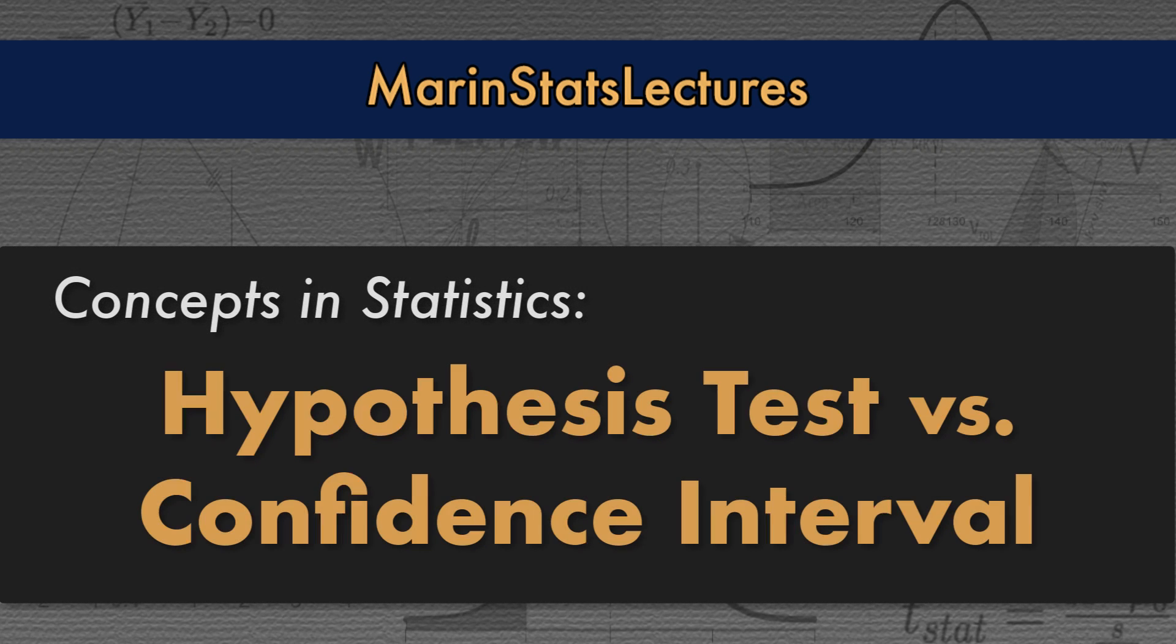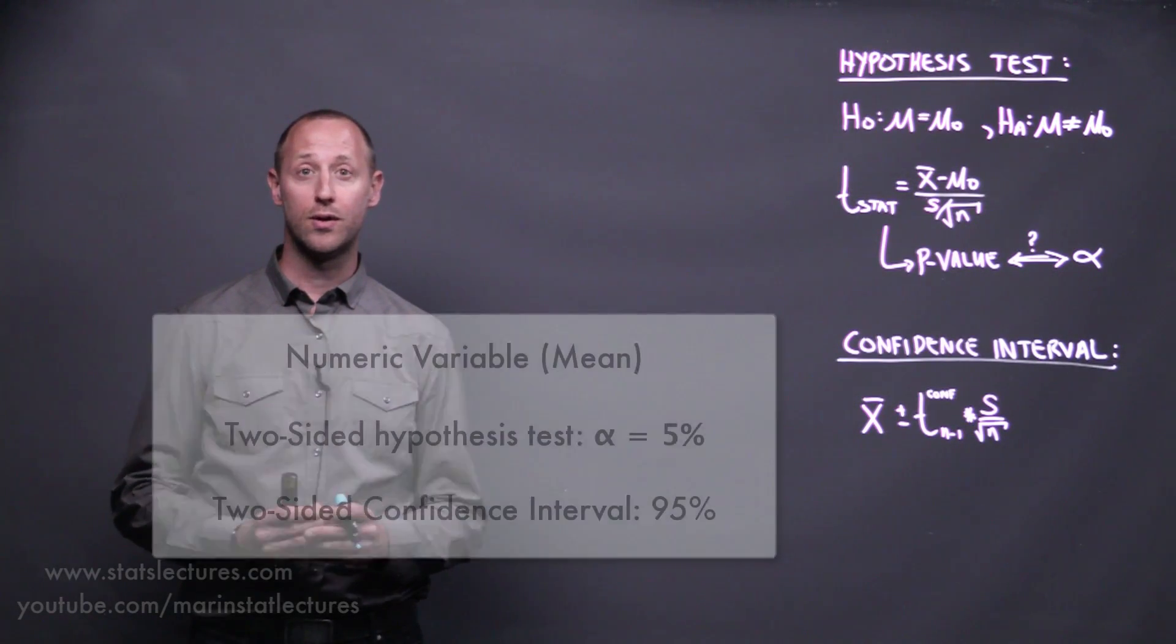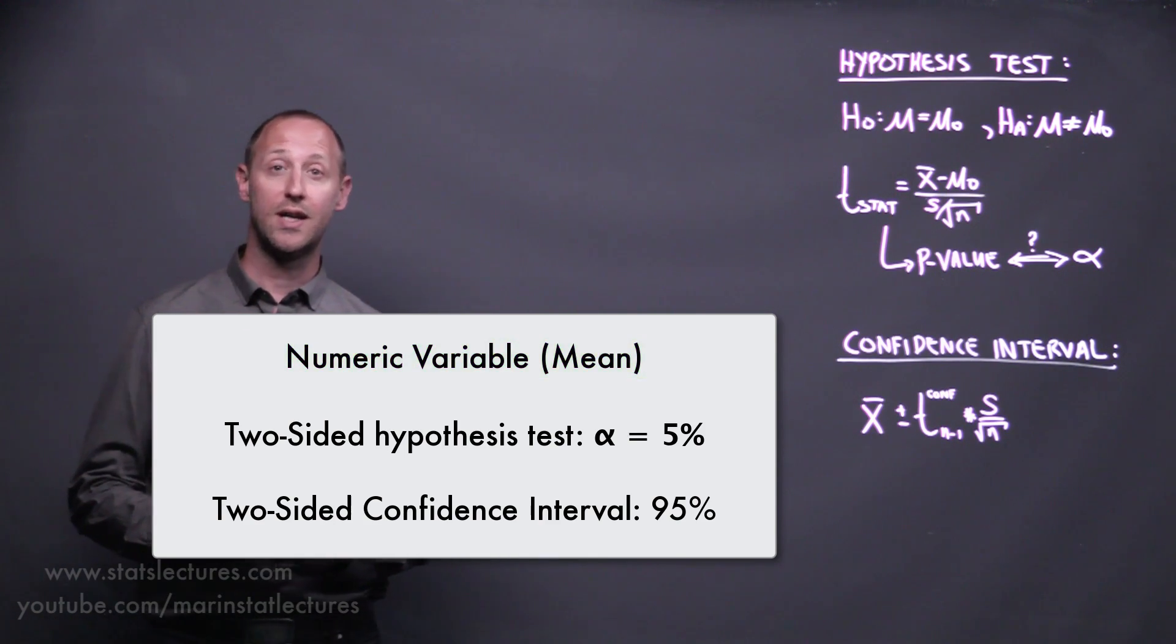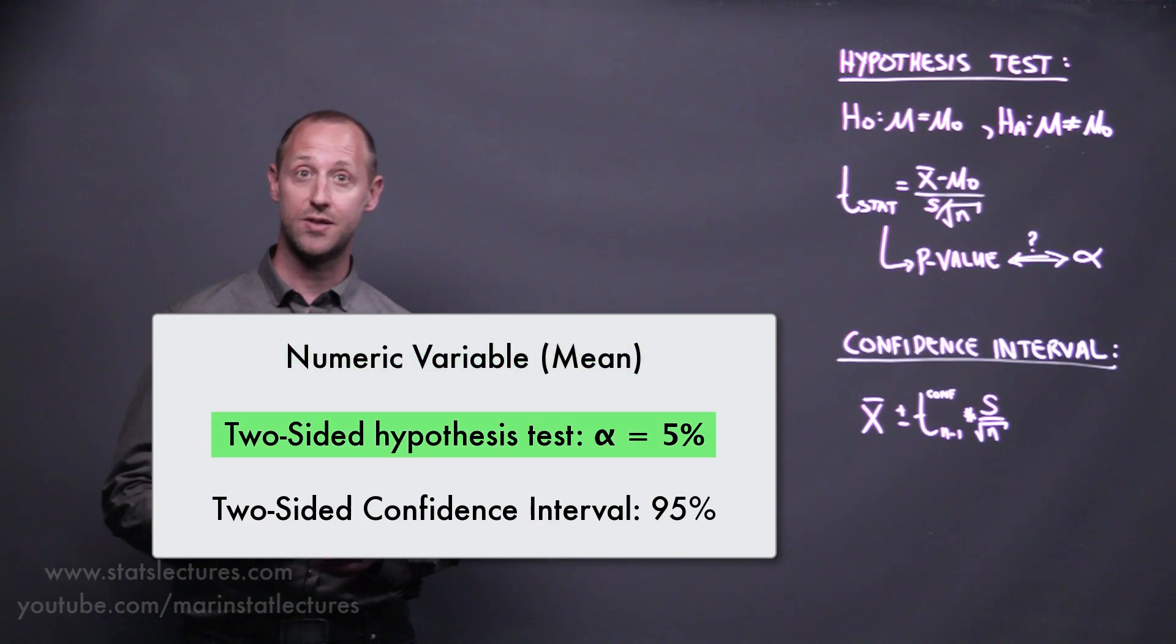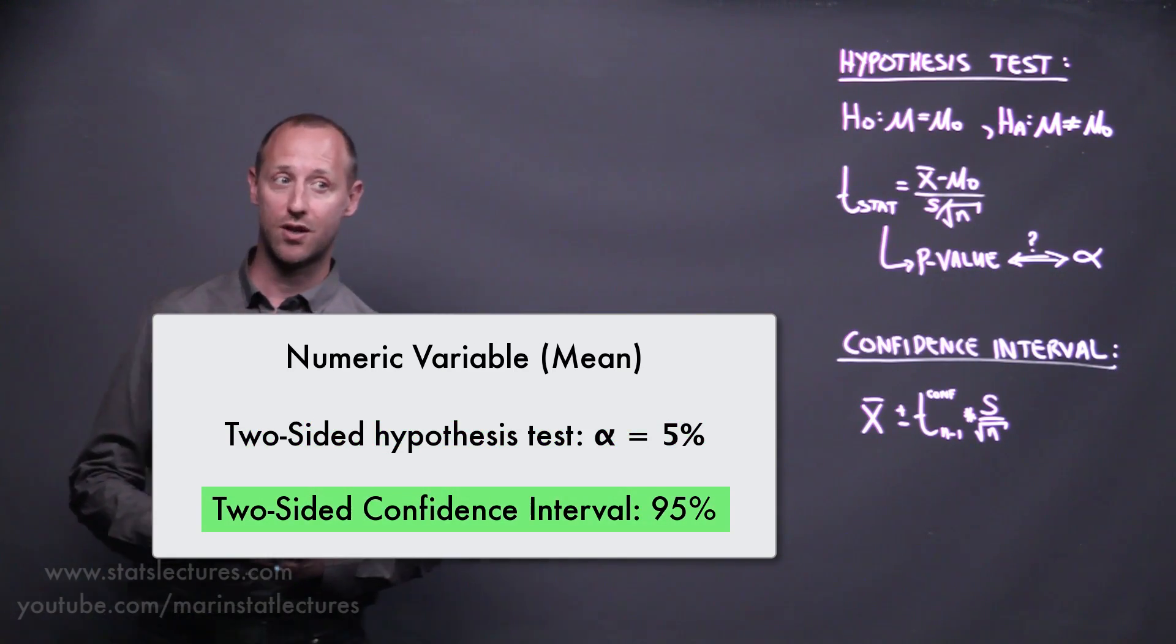We're going to talk about hypothesis tests and confidence intervals and how they're related. We're going to do this for one numeric variable and a mean, looking at a two-sided hypothesis test using an alpha of 5% and a two-sided confidence interval using 95% confidence.